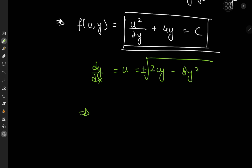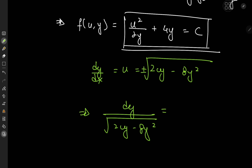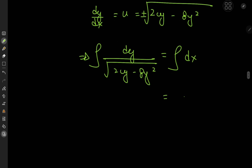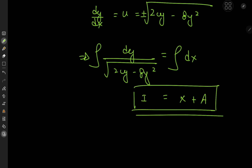Separating the variables, we have dy divided by the square root of (2cy minus 8y²) on the left and dx on the right. Integrating, the right hand side gives x plus a constant of integration a. The left hand side has an integral that can be solved nicely using a completing the square approach.